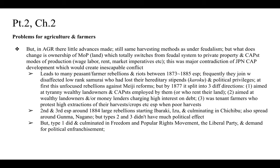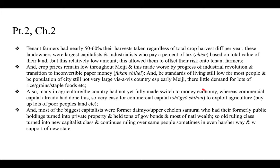The first group had more political effect, culminating in the Freedom and Popular Rights Movement, the formation of the Giyuto or Liberal Party, and demands for political enfranchisement. Tenant farmers had nearly 50 to 60 percent of their harvest taken regardless of crop yield variation per year. Landowners — the largest capitalists and industrialists — paid a percentage of chiso tax based on the total value of their land, a relatively low amount that allowed them to offset risk entirely onto tenant farmers. Crop prices remained low throughout the Meiji period, made worse by the industrial revolution and transition to inconvertible paper money, fukan shihei.